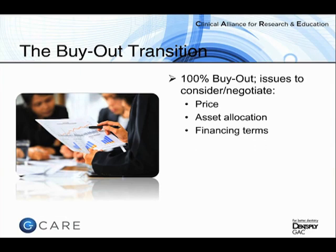Another item to consider is financing terms: who is financing the deal? Are you going to a bank and paying all cash? Is the seller financing some or all of the transaction price? Do you have family members who could help? Things to consider include interest rate, repayment periods, and whether you can afford the deal.